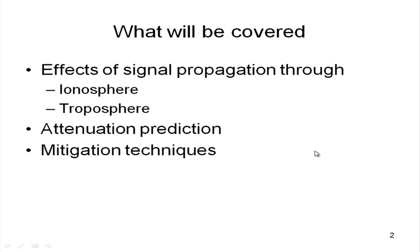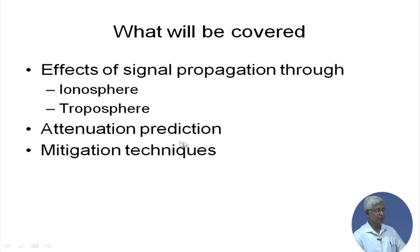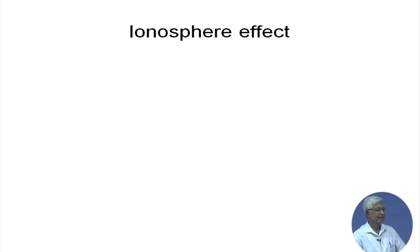In these couple of lectures we will cover the effects of signal propagation through mainly two spheres — the ionosphere and the troposphere. Then we will see some models for attenuation prediction and the different mitigation techniques so that we can do proper communication with good quality of service.